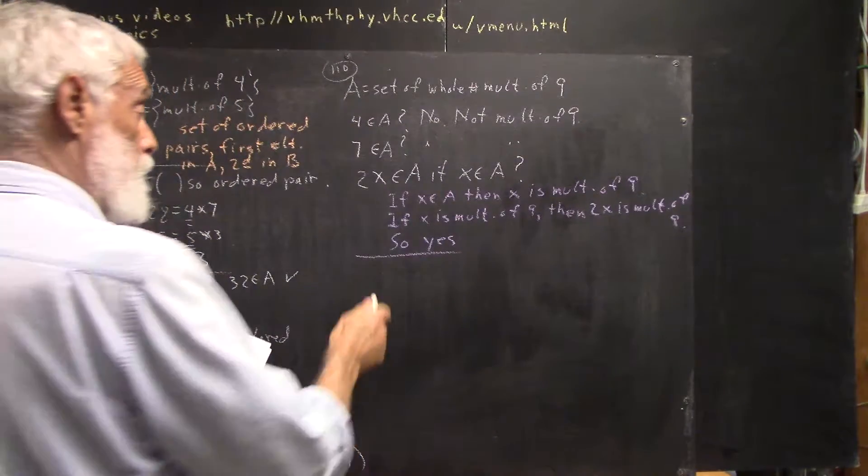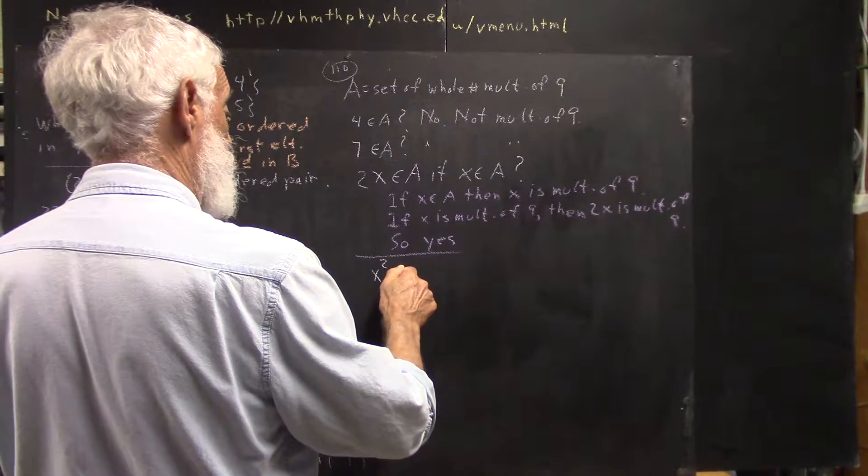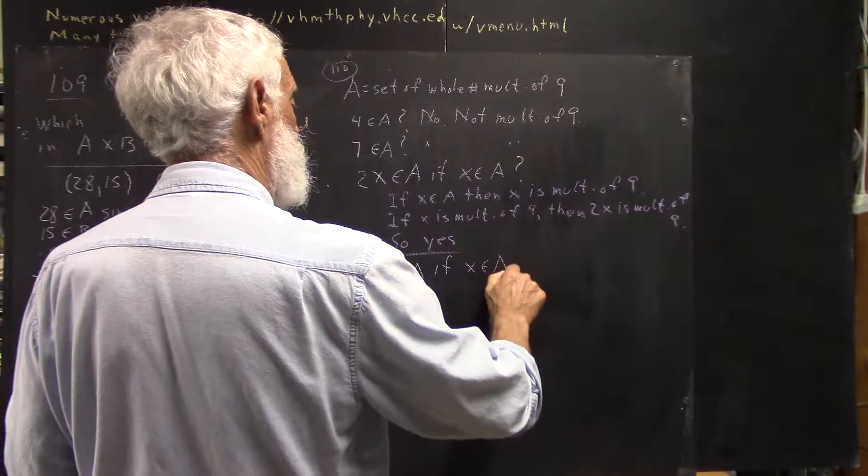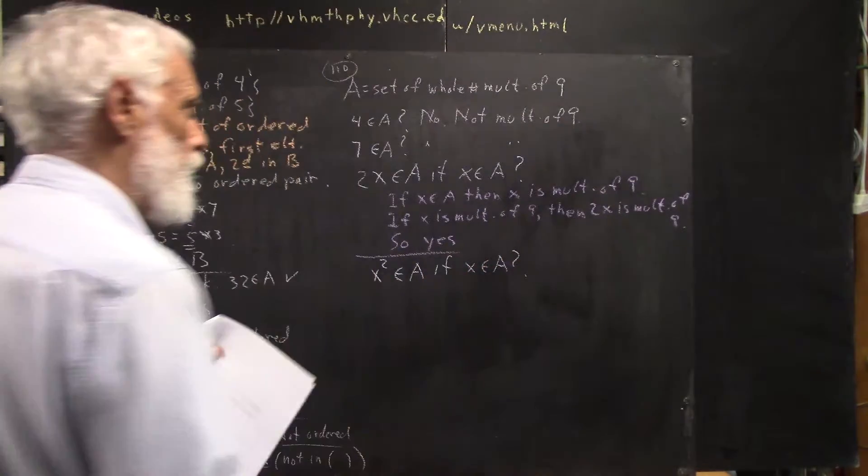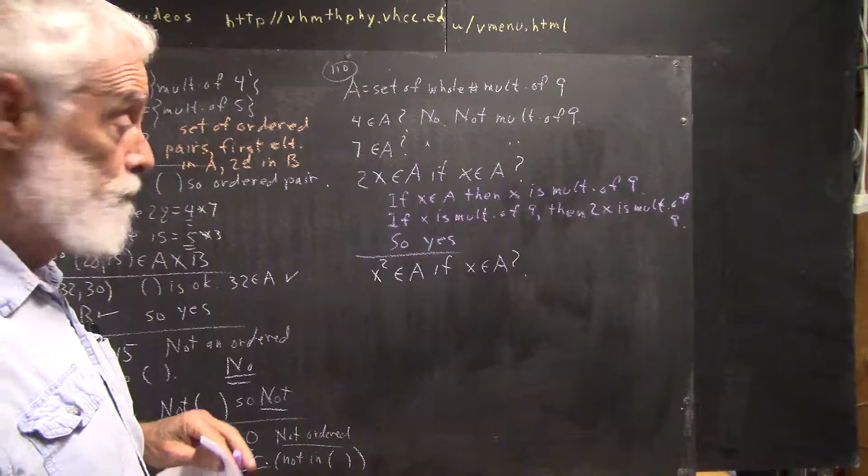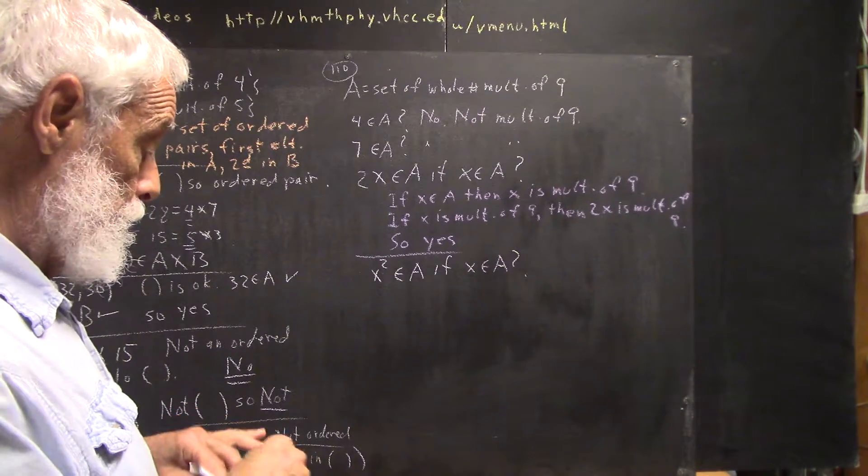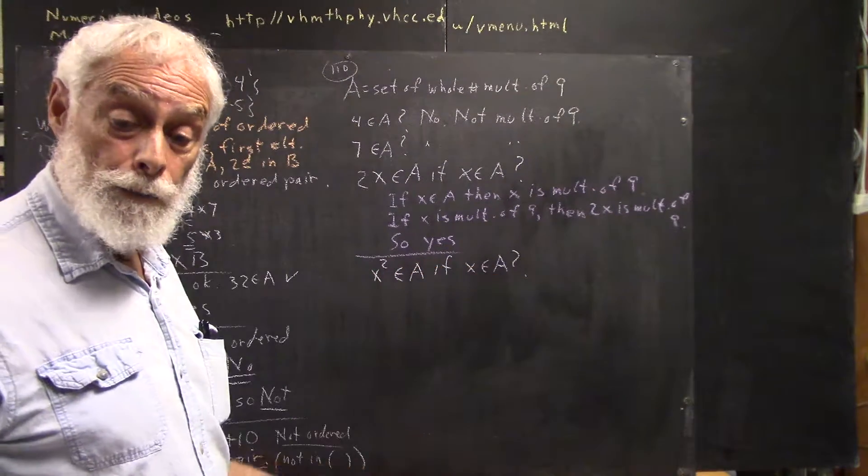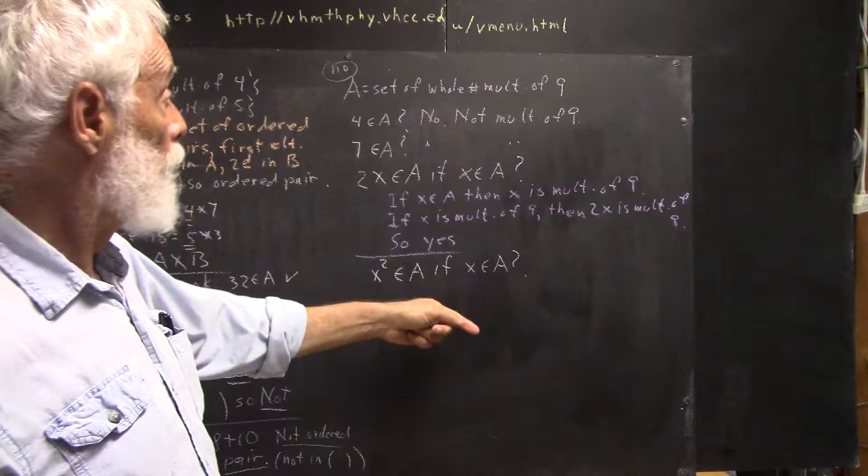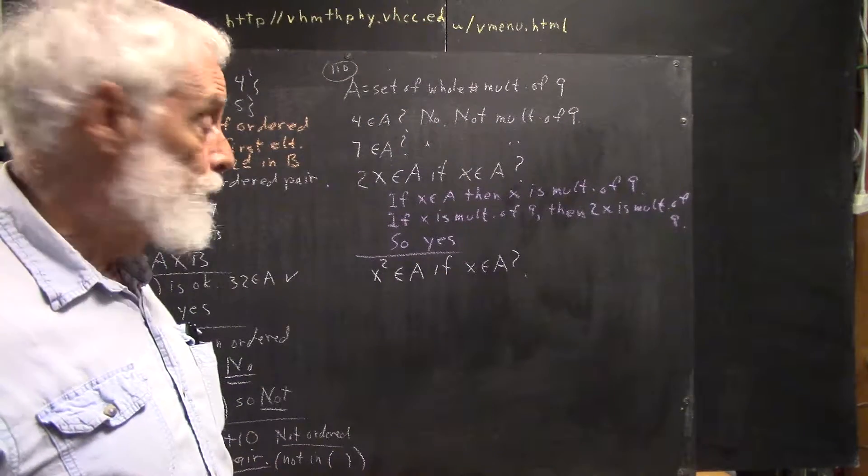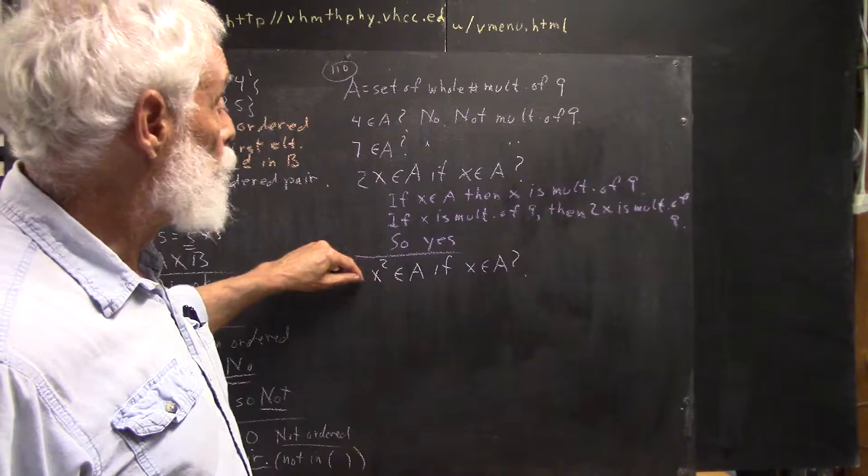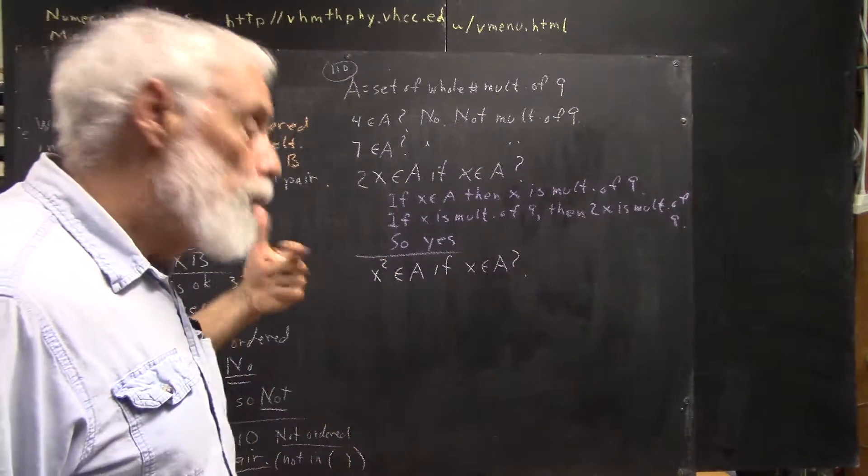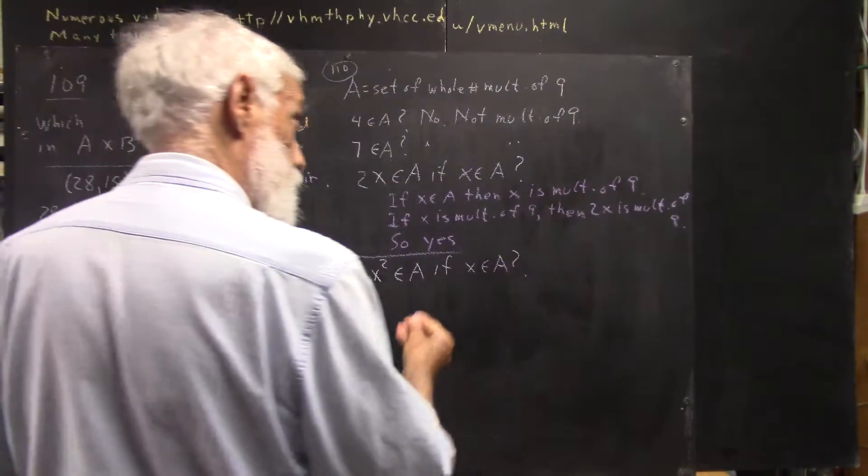Now, another one, which may be even a little more mysterious. Is x squared in A if x is in A? Well, what does it mean for x to be in A? Okay, if x is in A, then x is a multiple of 9. So, now, you're asking if the square of a multiple of 9 is in A. You square a multiple of 9, do you get a multiple of 9? And the answer is, again, yes.